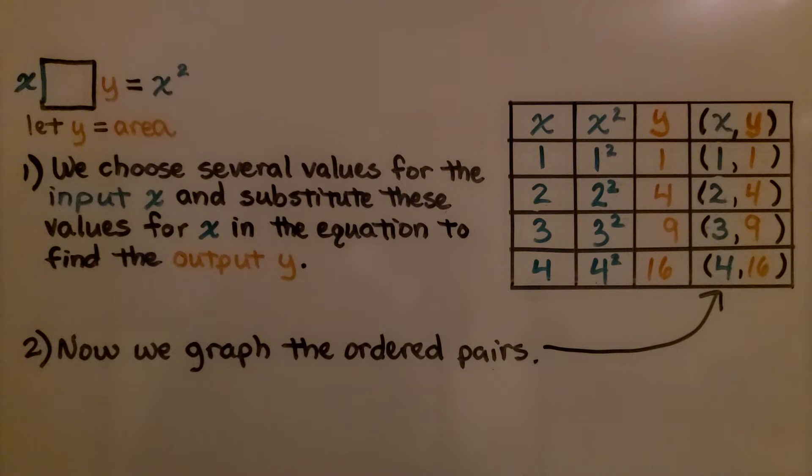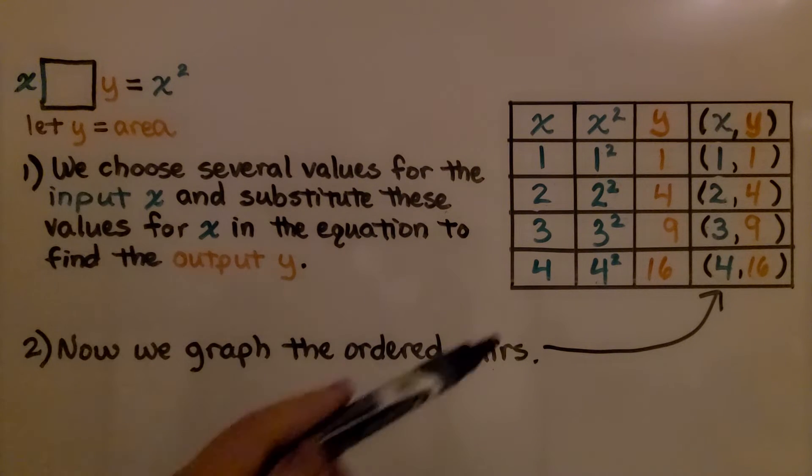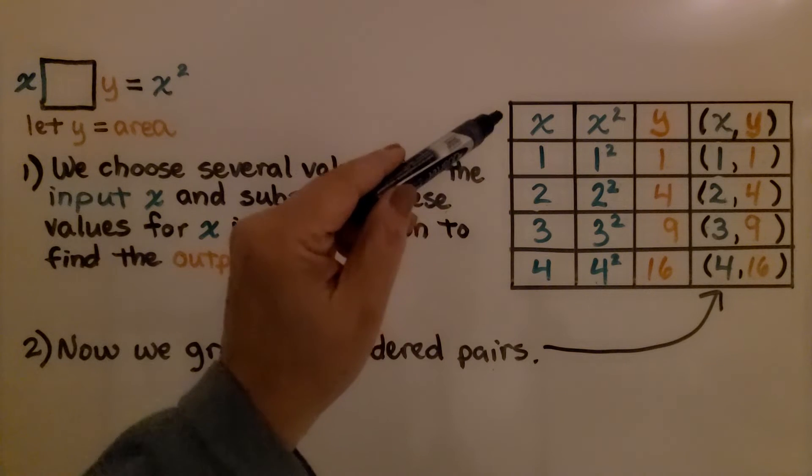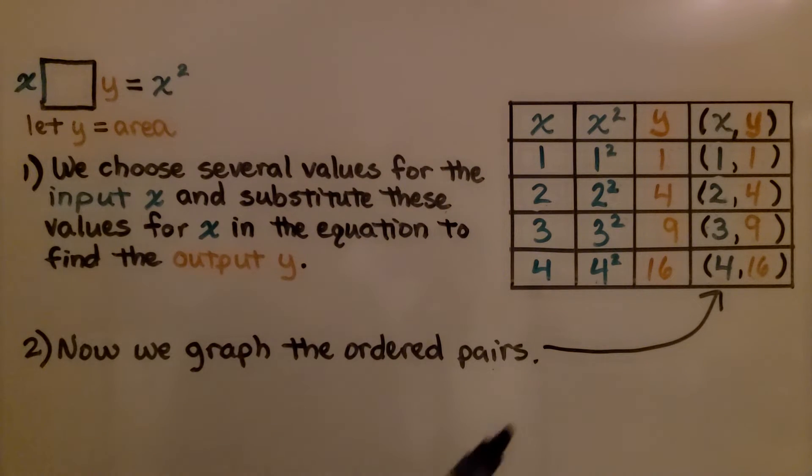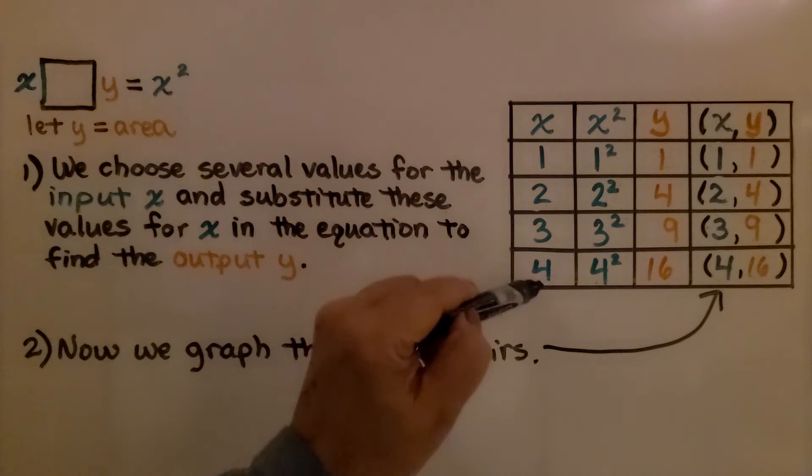We choose several values for the input x and substitute these values for x in the equation to find the output y. We can use 1, 2, 3, 4. We can choose any number. I could have used 10, 20, 30, 40 if I wanted to. It might be hard to graph because we're going to have to do that. So I chose 1, 2, 3, 4.